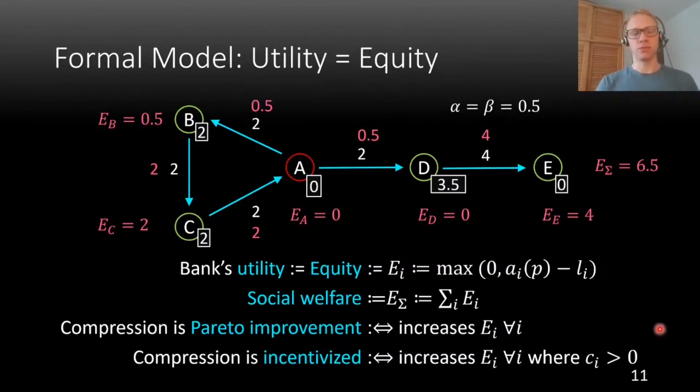We can also, in the usual way, define that a compression is a Pareto improvement if it increases the equity of each bank, and we can say that a compression is incentivized if it increases the equity of all banks where the compressed amount is greater than 0. Because as we have seen, all the banks that are somehow involved in the compression need to agree to it, and so it should increase their equity either weakly or strongly.